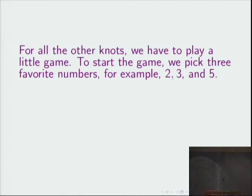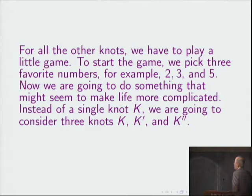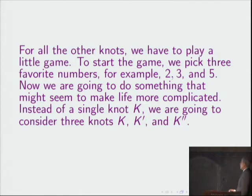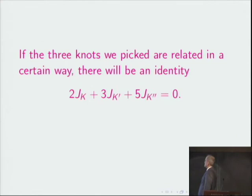For all the other knots, we have to play a little game. So to play the game, we pick three favorite numbers, for example 2, 3, and 5. But any numbers will do. And we're going to do something that might seem to make life more complicated. Instead of a single knot K, we're going to consider three knots: K, K prime, and K double prime. And if the three knots that we pick are related in a certain way, there's going to be a relationship, what mathematicians call an identity. Two times J of one knot plus three times J of the second knot plus five times J of the third knot is going to be zero. Remember, there's nothing special about the numbers 2, 3, and 5. We just picked them. Jones says you can pick your favorite numbers, in fact. This identity is so powerful that it will enable us to calculate the J's.